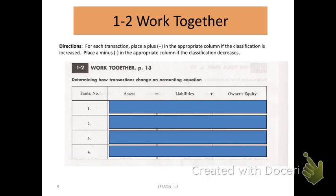Transaction one says that we bought supplies on accounts. We have to think about which two account titles are in this transaction. Supplies is an account title, and accounts payable is also an account title — those are the two accounts that will be affected. Bought supplies means we're increasing our supplies — we're adding to our cabinet or shelves. And buying it on account means we're buying supplies today and paying for it later. Whenever we owe something to somebody, it's considered a liability, and we are increasing how much we owe.